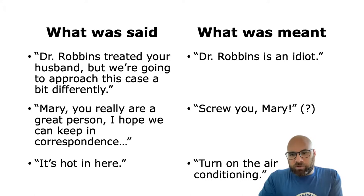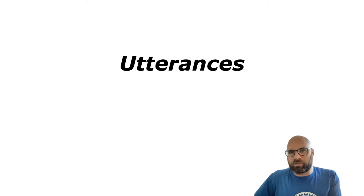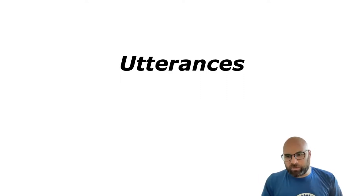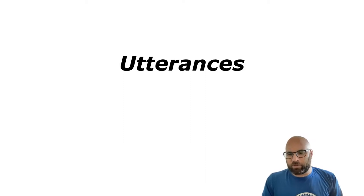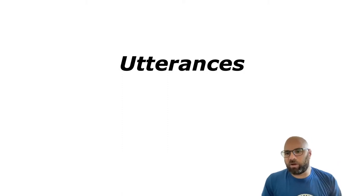As we wrap up this module, there's one other concept I want to talk about: utterances. When we talk about pragmatics we don't really talk about sentences — we talk about utterances. You've probably studied syntax and semantics before; in those subjects you often talk about sentences, but in pragmatics we use the term 'utterance' for two reasons. One reason is that in normal speech we usually don't speak in full sentences, so what someone says might not be a sentence. If someone just says 'hi,' that might not be a sentence, so we call that an utterance.